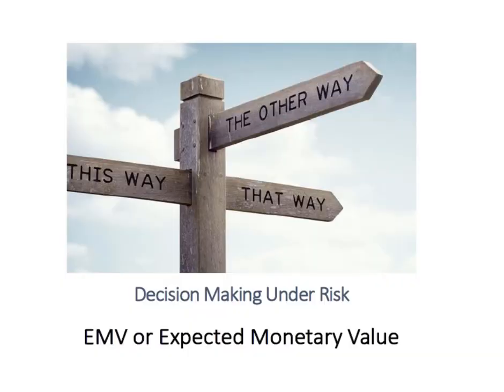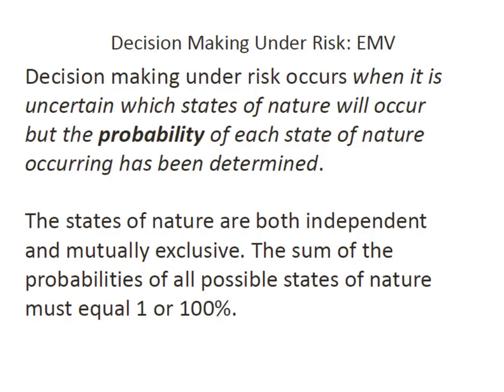Hey everybody, it's Professor Williams and we're going to talk about decision making under risk. When we make decisions under risk, we're talking about EMV or expected monetary value. Making decisions under risk occurs when the future is still uncertain — in other words, we don't know which state of nature is going to occur, but we have been able to find the probability of each state of nature occurring.